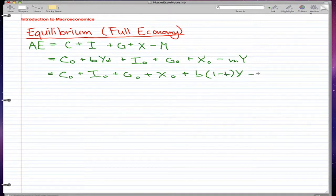And to go further, minus M times Y. And we can further refine this as such, C0 plus I0 plus G0 plus X0 plus B times 1 minus T minus M bracket Y. We just took out the Y, we just factored out the Y to get this equation here,